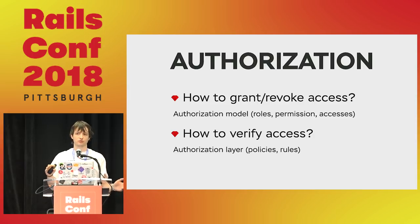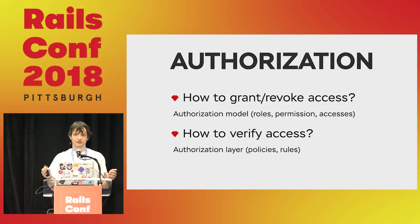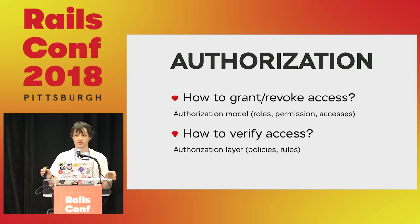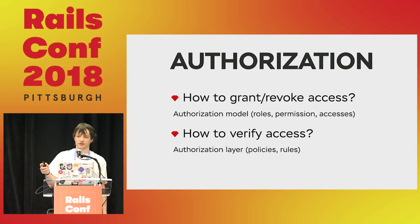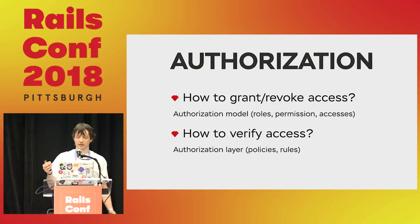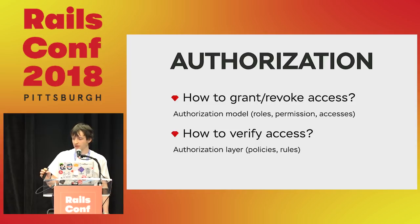Authorization itself consists of two parts. The first one is the authorization model — that's how we grant and revoke access, our model from the business logic point of view. That's where roles, permissions, and whatever other concepts you use to describe abilities live. The next part I call the authorization layer: it's how to check these abilities, how to integrate this model with your entry point to your data — typically in Rails applications, controllers.